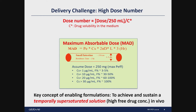Before discussing details, I'd like to give a general understanding of the challenge. The major challenge for oral products for BCS 2 and 4 compounds is a high dose number. The dose number is defined as the total dose divided by 250 ml — a somewhat arbitrary but widely used volume representing common GI fluid volume. This concentration divided by C-star, the drug solubility in the medium, defines the dose number. If the dose number is beyond 10 or 100, it presents a big challenge.